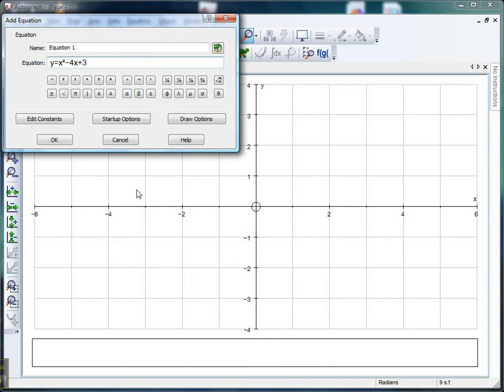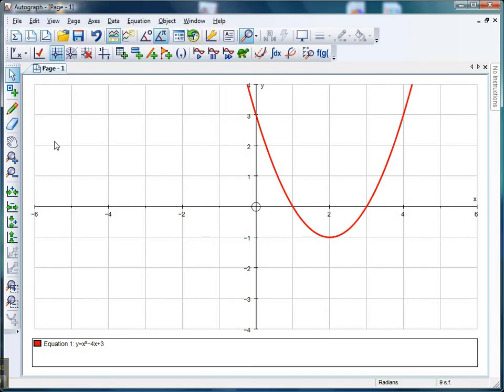Where would it cross the x-axis? Where would it cross the y-axis? Where's its minimum value? And when they're happy, we shall draw that. I'm not bothered with slow plot just to save a bit of time.